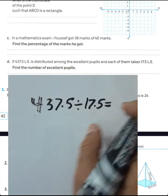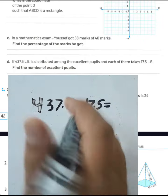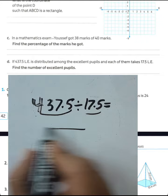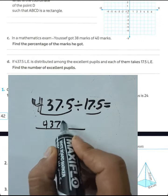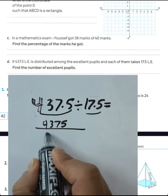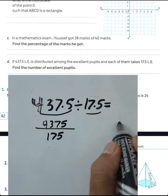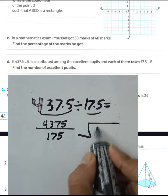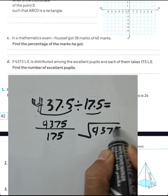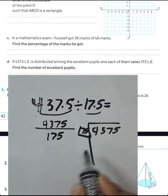here is decimal. You must cancel the point by multiplying by 10 the dividend and divisor. Then you can write 4375 and here multiply by 10, and then write long division 4375 divided by 175.